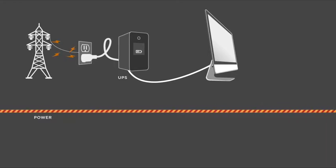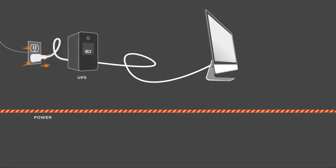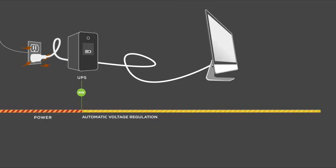UPS systems with automatic voltage regulation, or AVR, detect and correct these voltage fluctuations immediately. The equipment receives clean, consistent power at all times. In severe weather or during peak demand, utility power can have serious fluctuations.